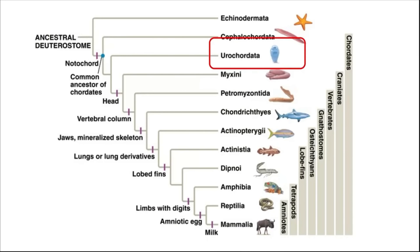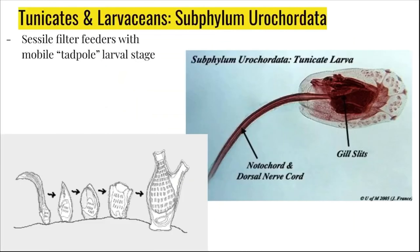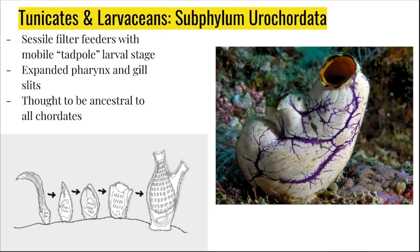The next group of chordates we'll talk about are the urochordates. The urochordates include the tunicates and larvaceans. Tunicates are sessile feeders with a mobile tadpole larval stage. On the far right, you can see the tunicate larva. It includes gill slits, a notochord, and a dorsal nerve cord. Once they find a suitable location, they grow into a somewhat sessile organism that looks a lot like a sponge. What's interesting is that these filter feeders are actually more closely related to us than a lot of other animals.